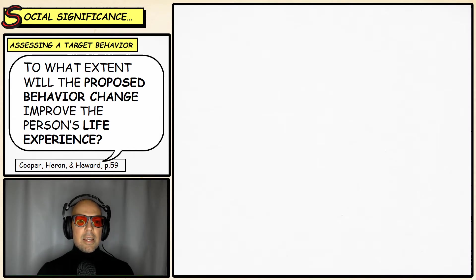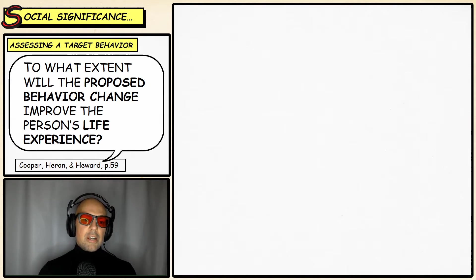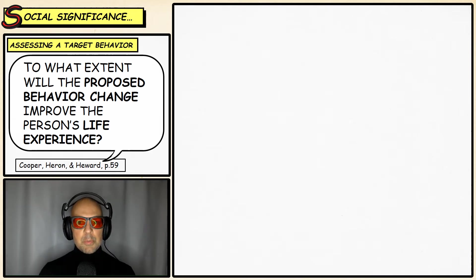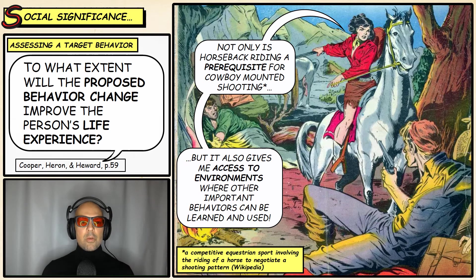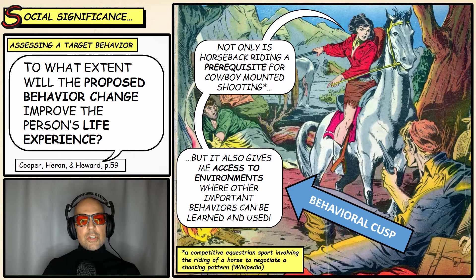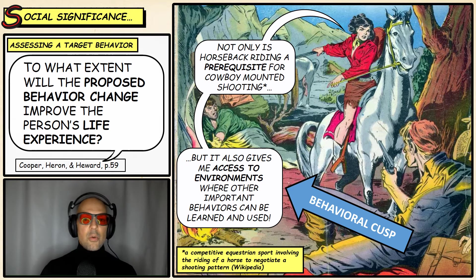Another question is whether the target behavior we're assessing for social significance is a behavioral cusp or a pivotal behavior — it could be one, the other, or neither. Behavioral cusps and pivotal behaviors are extremely significant behavioral categories. A behavioral cusp is a new behavior that sets the occasion to access reinforcers that otherwise would not have been available. Using our horseback riding example, this would be a behavioral cusp because it allows the individual to travel to new environments — and importantly, to new reinforcers — that otherwise would not have been available.